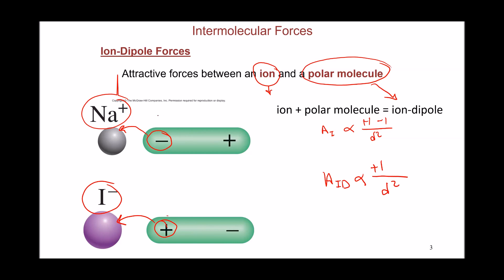Since the dipole has only a partial charge — not a complete charge, perhaps about 0.5 — the ion-dipole force is weaker than a purely ionic interaction. It's a direct proportionality: higher charge means stronger attraction, lower charge means weaker attraction. That specific type of interaction is responsible for the ability of polar solvents to dissolve ionic compounds.